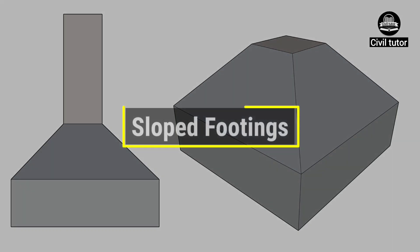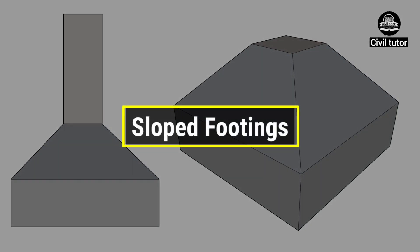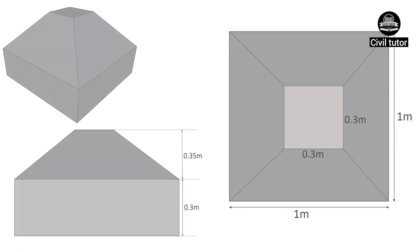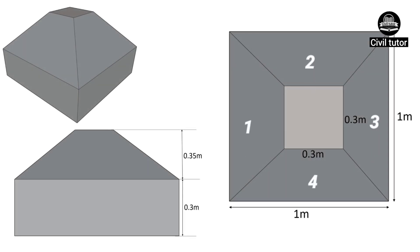Trapezoidal footings are also called sloped footings. A sloped footing consists of four trapezoidal sides which are inclined at 45 degrees from all sides. These are constructed with great care in order to maintain a proper slope.